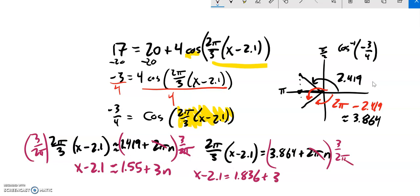So now I need to add the 2.1 to both sides, so add 2.1. 3.936 plus 3n, those should be two of my answers.